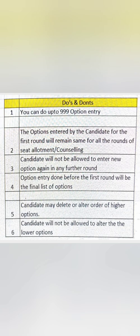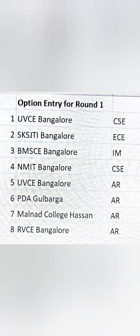Rules five and six are applicable when you are moving from one round of counseling to the next — from first round to second round, and second round to third round. A candidate may delete or alter higher options only. You have permission to delete and modify only the higher options. You cannot alter the lower options. I'll explain these points with an example.